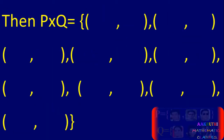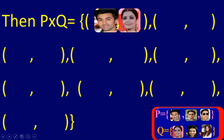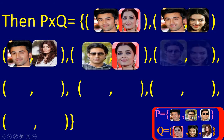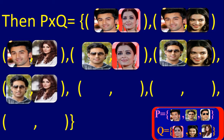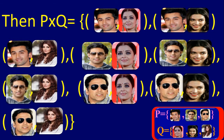Now we consider P cross Q. With Ranbir Kapoor, Aishwarya Rai; then Ranbir Kapoor, Deepika Padukone; Ranbir Kapoor and Winkel Kanna. Next we start with Akshay Kujan: Akshay Kujan, Aishwarya Rai; Akshay Kujan, Deepika Padukone; Abhishek Bachan, Winkel Kanna. Next we start with Akshay Kumar: Akshay Kumar, Aishwarya Rai; Akshay Kumar, Deepika Padukone; and Akshay Kumar, Winkel Kanna. So here we have 9 elements in Cartesian product P cross Q.